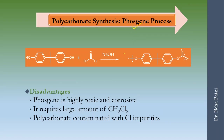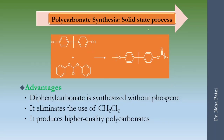Let's look at the first example: the phosgene process for preparing polycarbonate. This process is not green and does not follow Principle Number Three because phosgene is highly toxic and corrosive. It also requires a large amount of methylene chloride, and the polycarbonate produced is contaminated with chlorine. So this is not a green process. The solution is to change the entire process to a solid-state process.